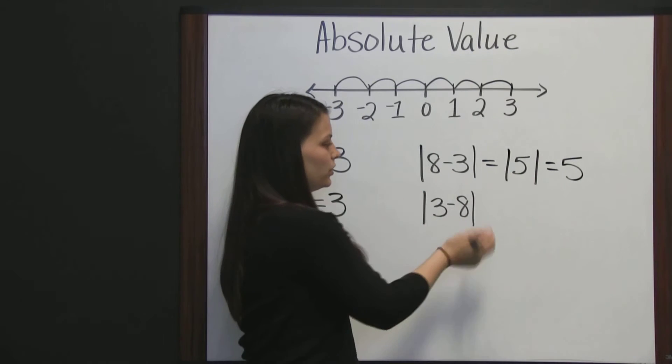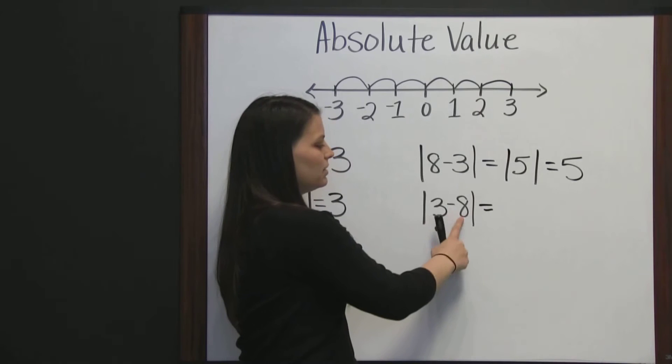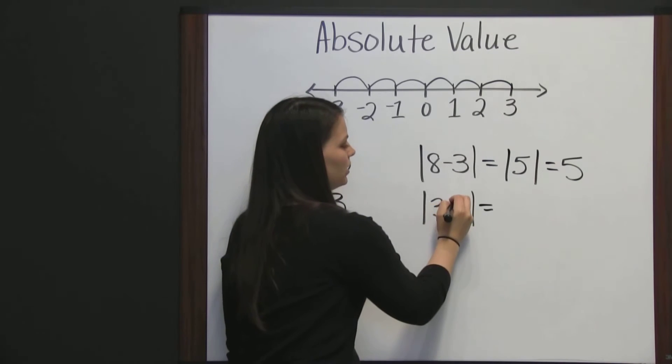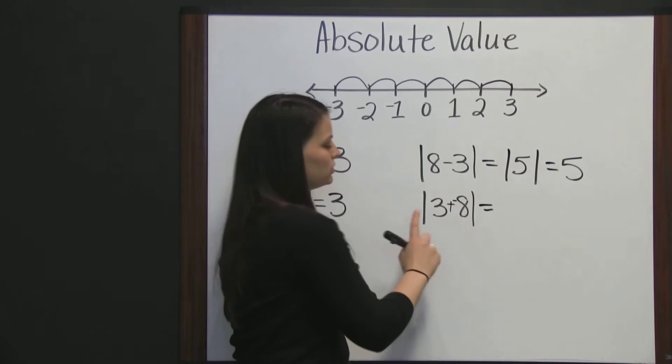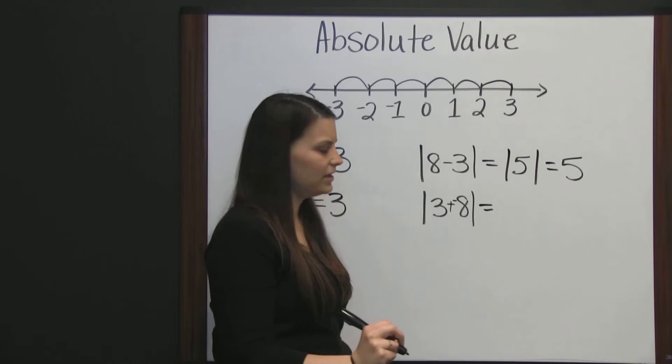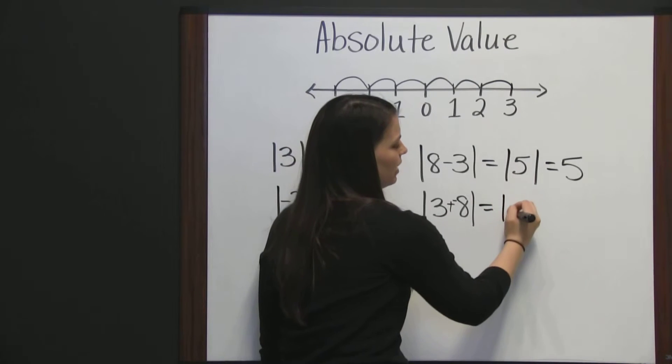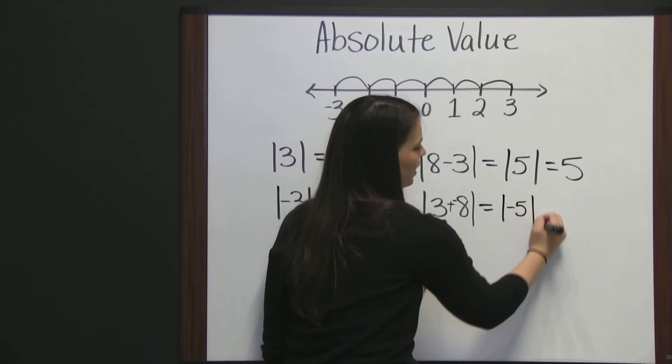Now, we'll look at the difference switched around. Three minus eight. Three minus eight, you could do add the inverse of three plus a negative eight. Three plus a negative eight is negative five. So, we have the absolute value of negative five.